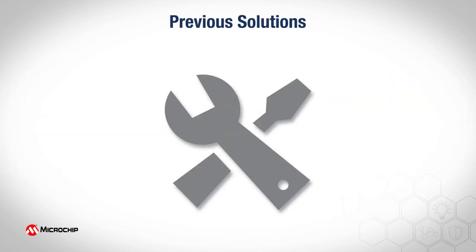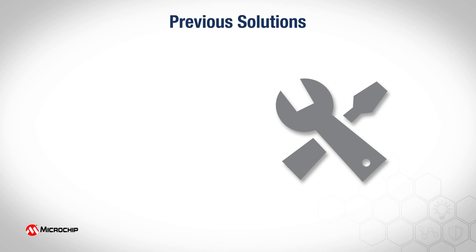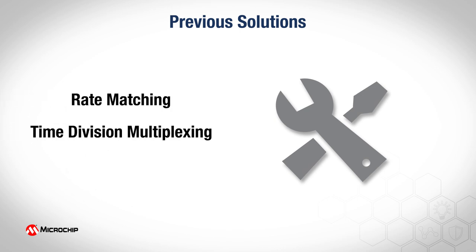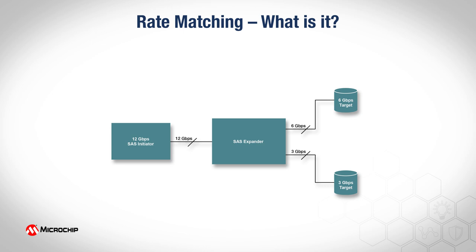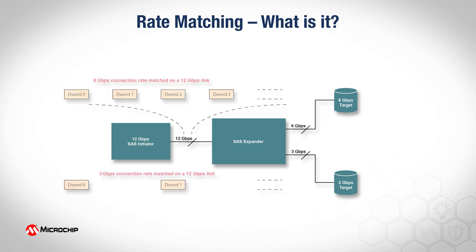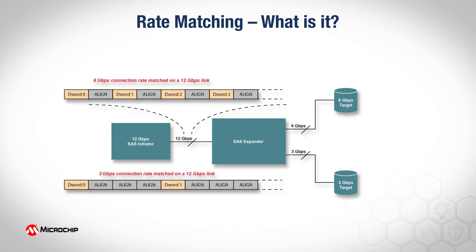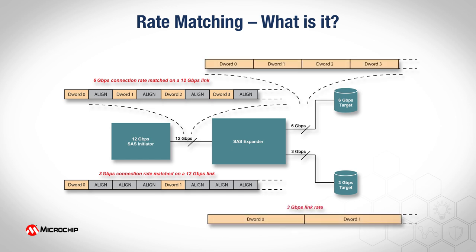This problem has been addressed using the following technologies, which have their own limitations: rate matching, time division multiplexing, and edge buffering. Let's examine each to understand the value that DCM provides. Rate matching is defined in the SAS standard specification and is performed by interleaving deletable primitives on a higher rate connection to match the bandwidth available at a lower rate device, which wastes a significant portion of the bandwidth provided by the shared pathway.